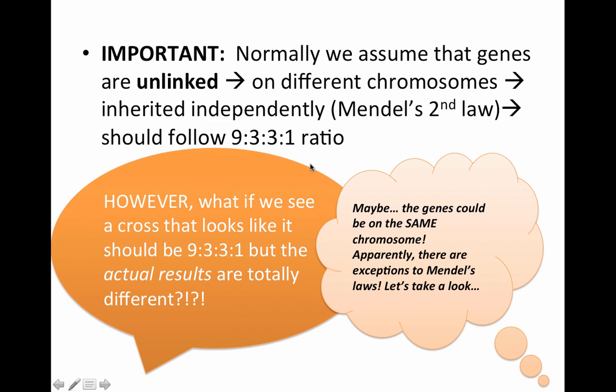But what if we have a situation where everything is going as expected: two parents, both heterozygous for both traits, and we cross them and examine a thousand of their actual seeds. And the numbers totally don't match up with 9 to 3 to 3 to 1. You go back, double check, and everything is right — both parents are heterozygous for both traits: RrYy crossed with RrYy — yet the numbers still do not match 9 to 3 to 3 to 1. This means something unusual is going on.